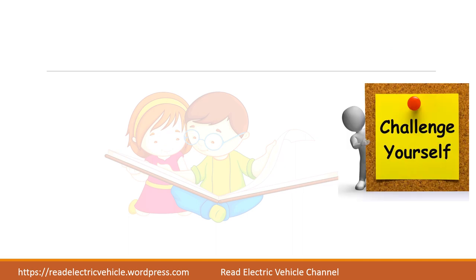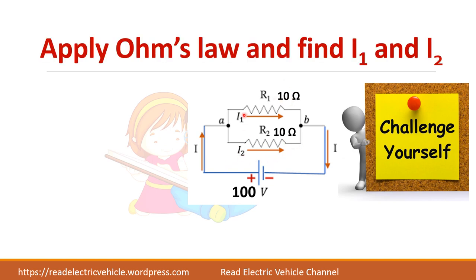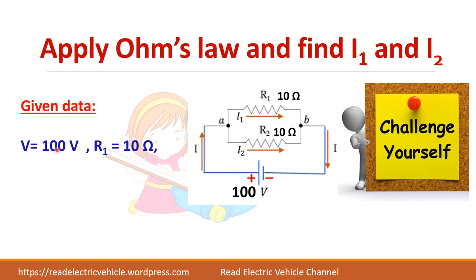Now here is a question for you to solve. In this circuit, 100 volts is applied across two resistors R1 and R2, both having the same value of 10 ohms. The 100 volts is applied across each resistor. Find the currents I1 and I2. Solve it and give your answer in the comment section.